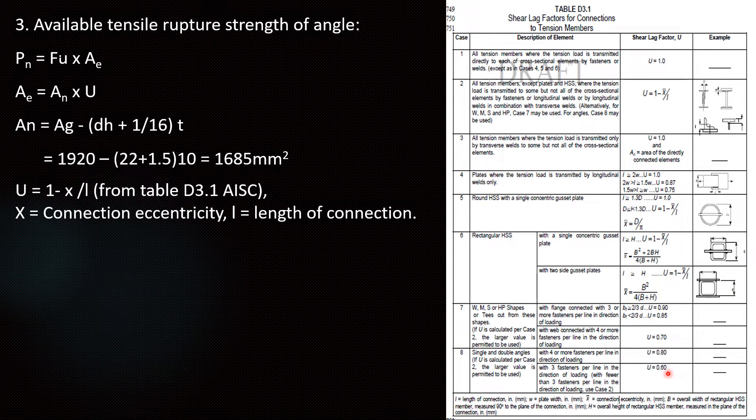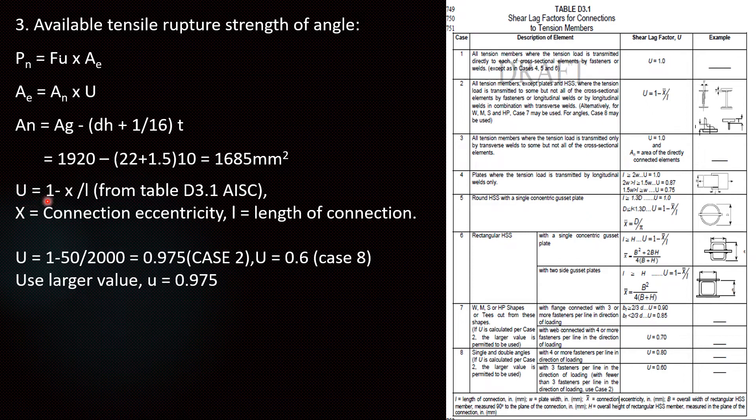First we will calculate based on case 2. As per case 2 the formula is 1 minus x by l. x is the connection eccentricity and l is the length of connection. I am assuming that our eccentricity is 50 mm and our connection length is 2 meter. So we are getting U value as 0.975 as per case 2.